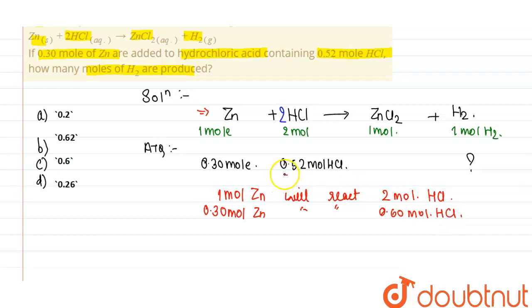In the question, 0.52 moles of HCl is given. So we can say that HCl is the limiting reagent here.